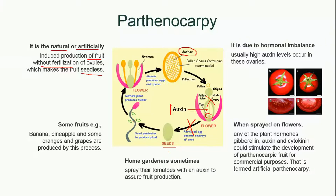Examples of parthenocarpic fruits include banana, pineapple, some oranges, and grapes. Parthenocarpy occurs due to hormonal imbalance — the hormone level inside the ovary increases or decreases, which leads to seedless fruit production. The specific hormone responsible is auxin.